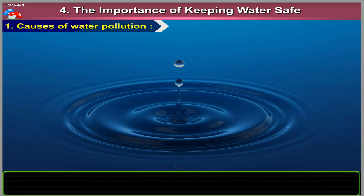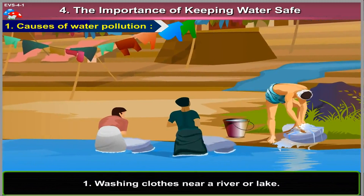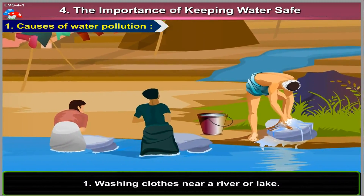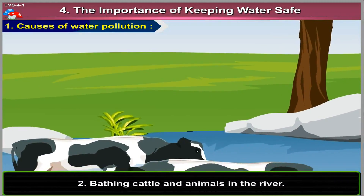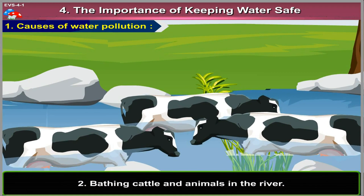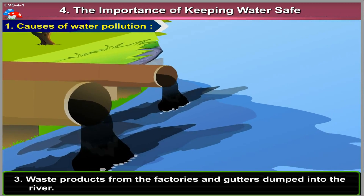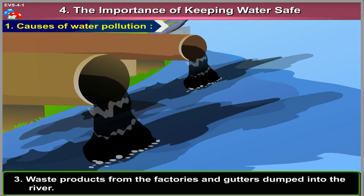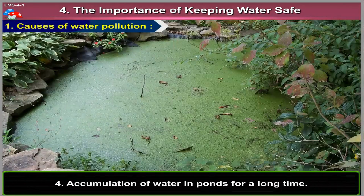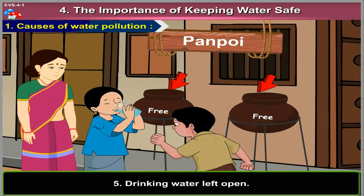Causes of Water Pollution: 1. Washing Clothes Near a River or Lake. 2. Bathing Cattle and Animals in the River. 3. Waste Products from factories and gutters dumped into the river. 4. Accumulation of Water in Ponds for a Long Time. 5. Drinking Water Left Open.